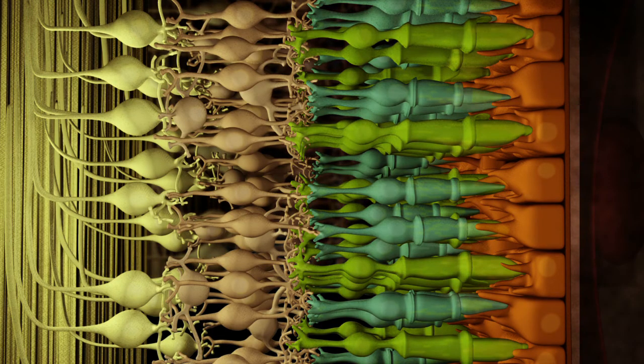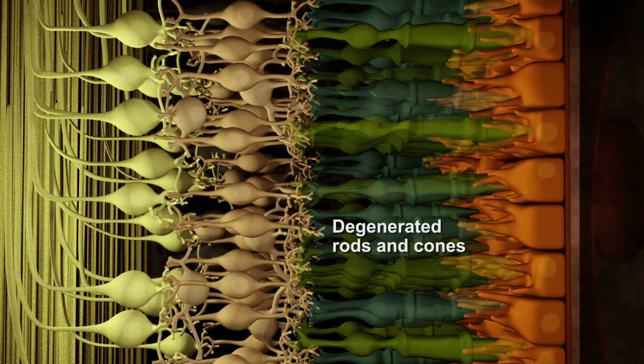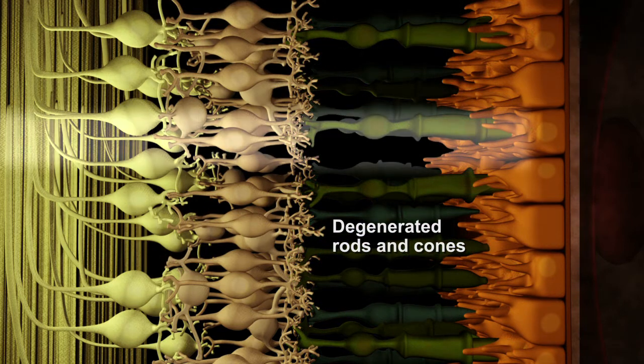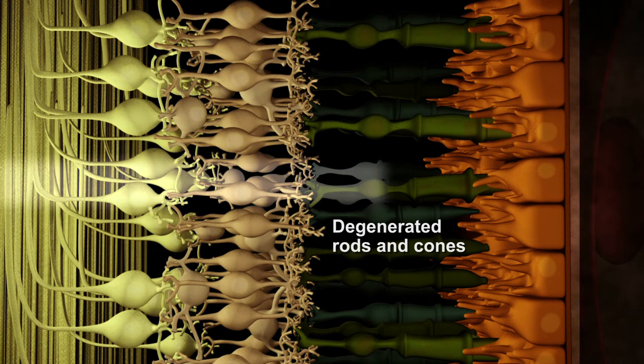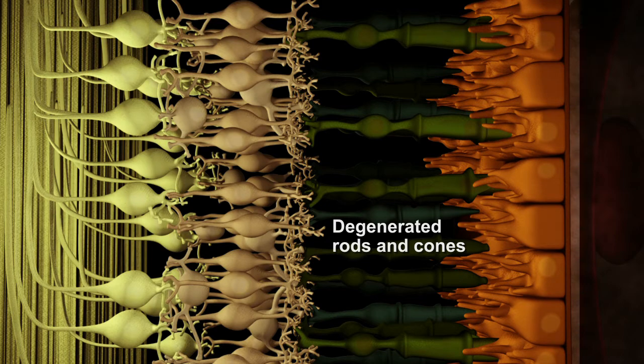Degenerative diseases of the eye, such as retinitis pigmentosa, affect the photoreceptors and cause damage to this pathway of information in the retina leading to irreversible vision loss.